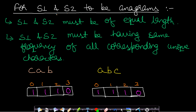For s1 and s2 to be anagrams, two conditions must hold: first, s1 and s2 must be of equal length; second, s1 and s2 must have the same frequency of all corresponding unique characters. For example, if s1 is 'cab' and s2 is 'abc', the unique characters in both are c, a, and b — so they are the same.